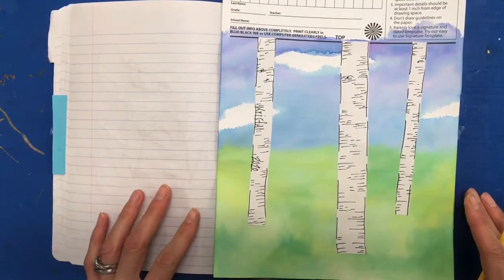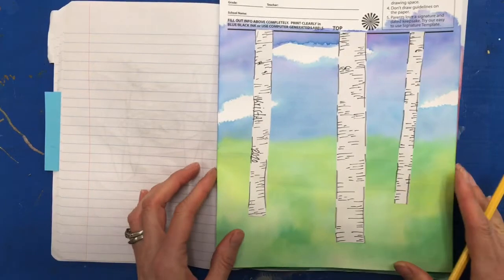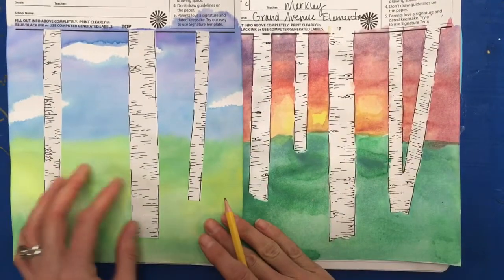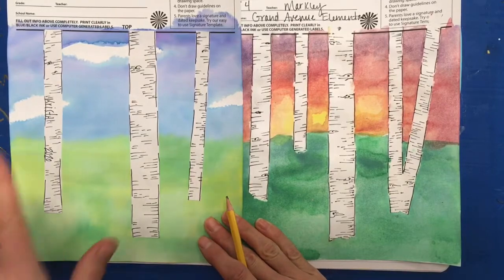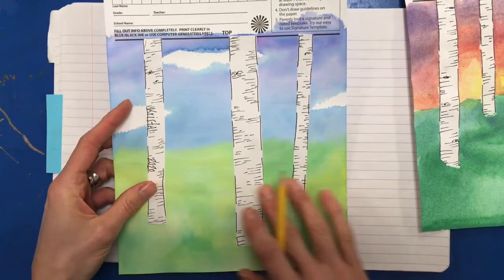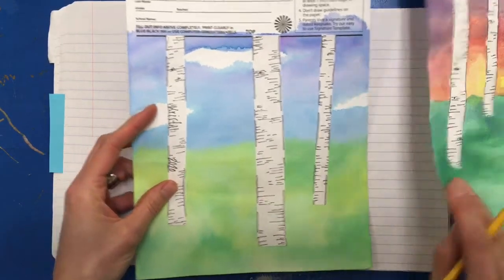Hi boys and girls, today we are going to plan our birch tree painting. Here's a couple examples for you to look at. You can see that this one here has a blue sky and three trees. This other example...